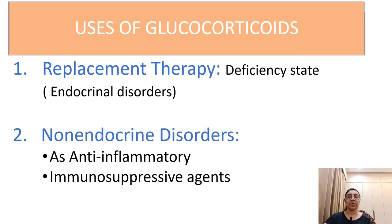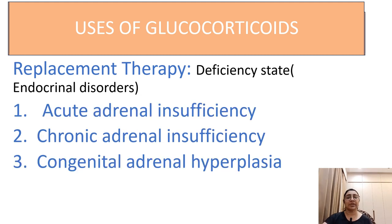There are two types of uses. First is the replacement therapy in deficient states, which is an endocrinal disorder. Second is non-endocrinal disorders where corticosteroids act as an anti-inflammatory as well as an immunosuppressive agent. In replacement therapy, there are three types of deficient states: acute adrenal insufficiency, chronic adrenal insufficiency, and congenital adrenal hyperplasia.